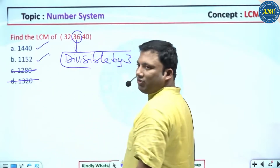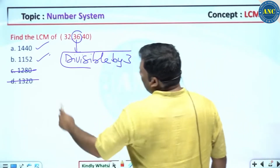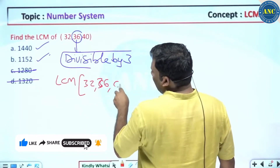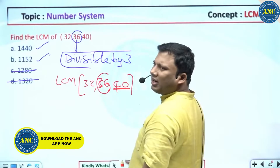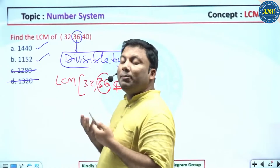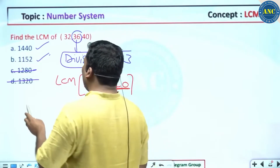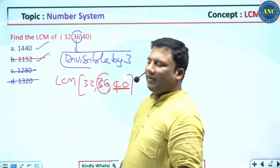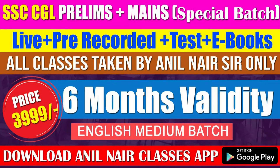Now comes another concept — how mathematics has evolved. LCM of 32, 36, and 40. If I take 40, it is divisible by 5, so the answer should also be divisible by 5. What is the nature of a number divisible by 5? The unit digit should be 0 or 5. The answer 1152 — check its unit digit. Take LCM of 3 and 5: it is 15, which is divisible by 5.